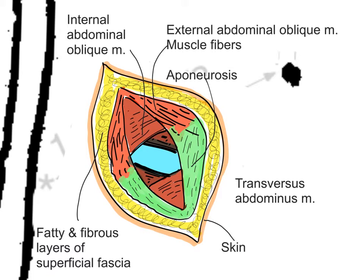The third layer, the transversus abdominus muscle, runs transversely across the abdomen. These fibers are also separated, like the internal abdominal oblique, to expose the underlying peritoneum and extraperitoneal tissue. This tissue is then carefully incised by picking it up in forceps, checking that there is no bowel underneath, and once a cut is made, one gets access to the peritoneal cavity and can start looking for the appendix.